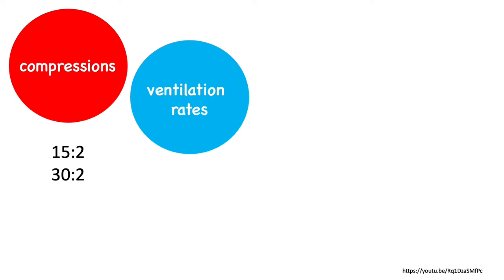Ventilation rates for kids are different from adults. Whether it's rescue ventilations or ventilations during continuous CPR with an advanced airway in place, we'll look at a ventilatory rate of one breath every two to three seconds, which is 20 to 30 ventilations per minute.